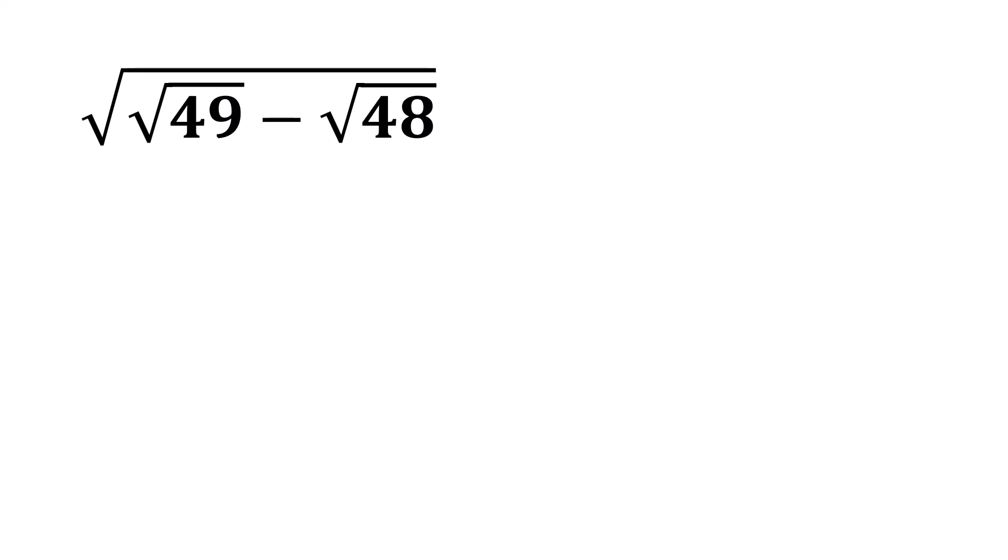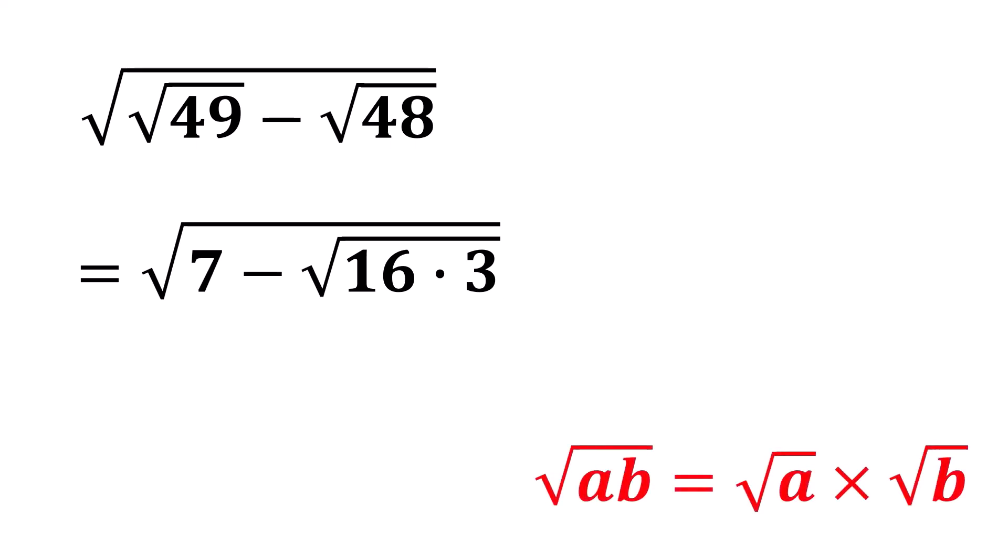So we can rewrite the expression as the square root of 7 minus the square root of 16 times 3. Now, using the law of exponents that says the square root of AB equals the square root of A times the square root of B,